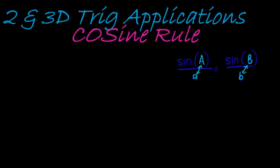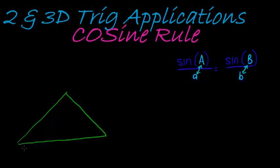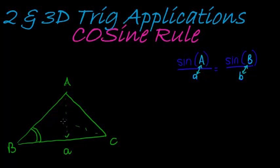Let's imagine a triangle with vertices A, B, and C. The information we have is: angle B, side length A, and side length C.